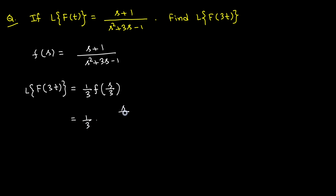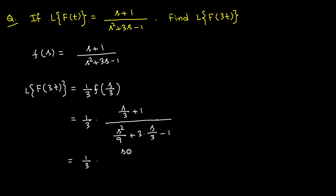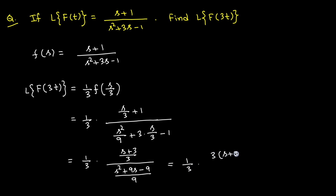So L{f(3t)} = (1/3) · [(s/3+1) / (s²/9 + 3·(s/3) − 1)] = (1/3) · [(s+3)/3 / (s²/9 + s − 1)]. Simplifying the numerator and denominator: (1/3) · [3(s+3) / (s²+9s−9)], which gives the answer: (s+3)/(s²+9s−9).